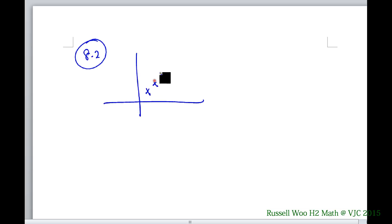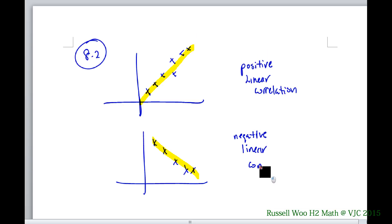If you have points like that in general, this is what we call positive linear correlation. If it's like that, in general downwards—need not fit perfectly to a straight line—you have negative linear correlation.